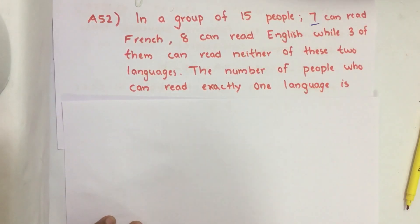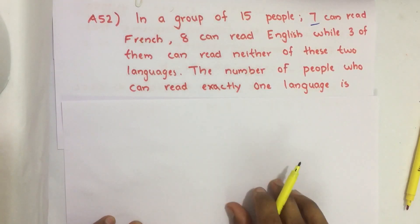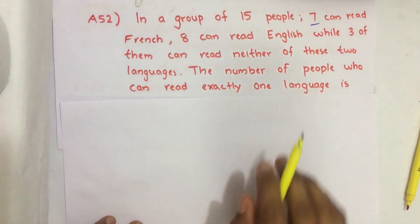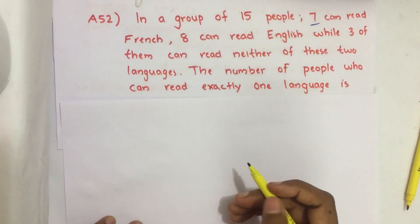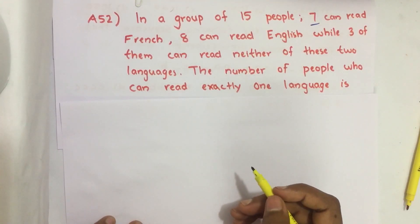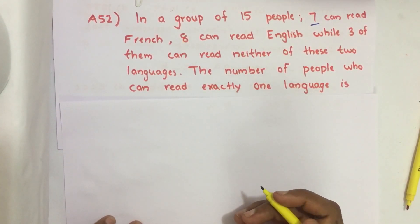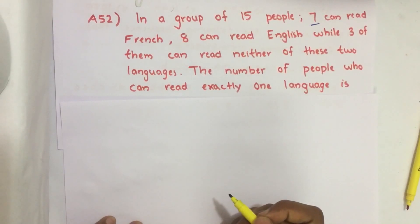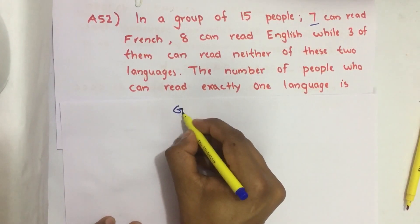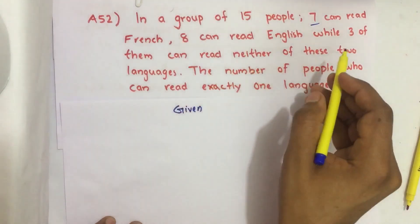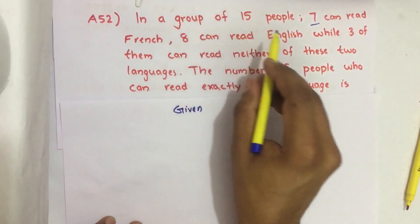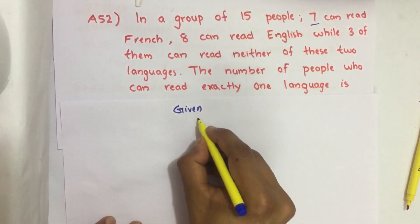Hello everyone. Here I am going to solve the 2019 CSAT question number 52 from question paper series A. In a group of 15 people, 7 can read French, 8 can read English, while 3 of them can read neither of these two languages. The question asks for the number of people who can read exactly one language. Given: total number of people equals 15.